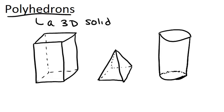Looking at these three pictures, two of these are polyhedrons and one is not. Because all of the faces have to be polygons, this solid down here is not a polyhedron because it has a curved face along the side. This is called a cylinder and it is not a polyhedron.